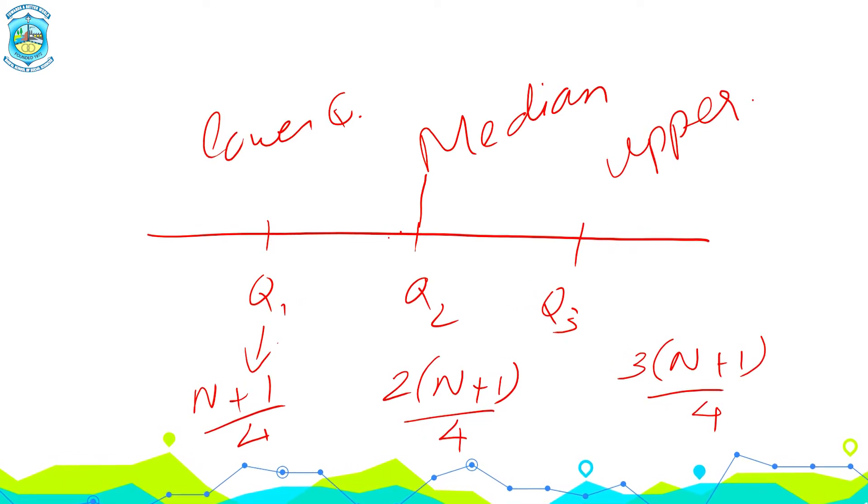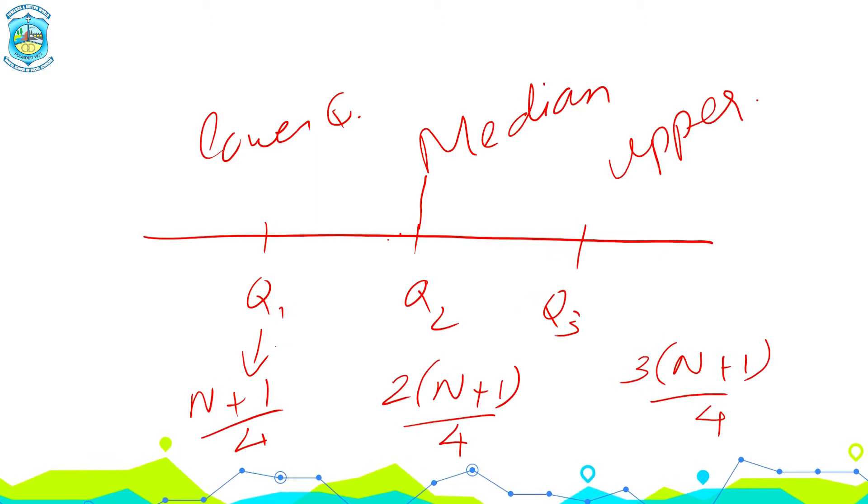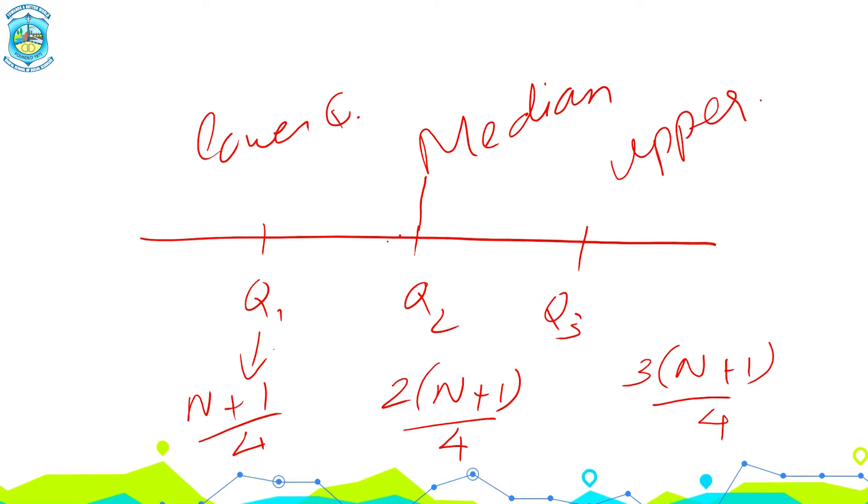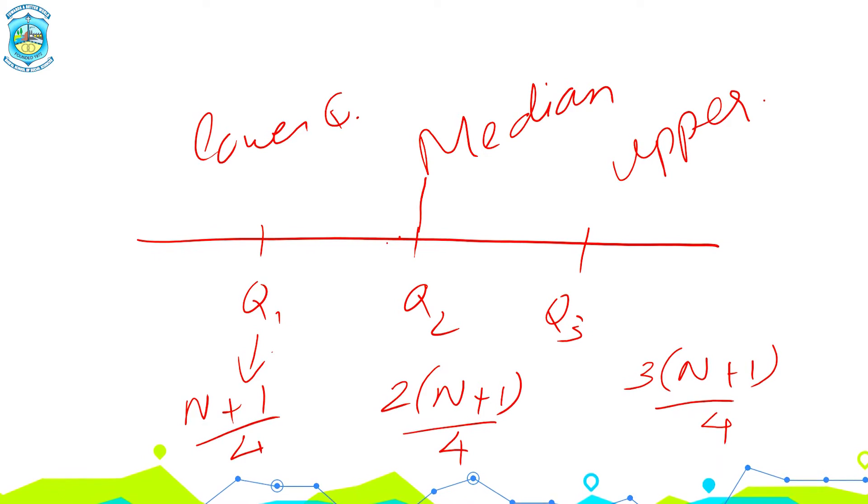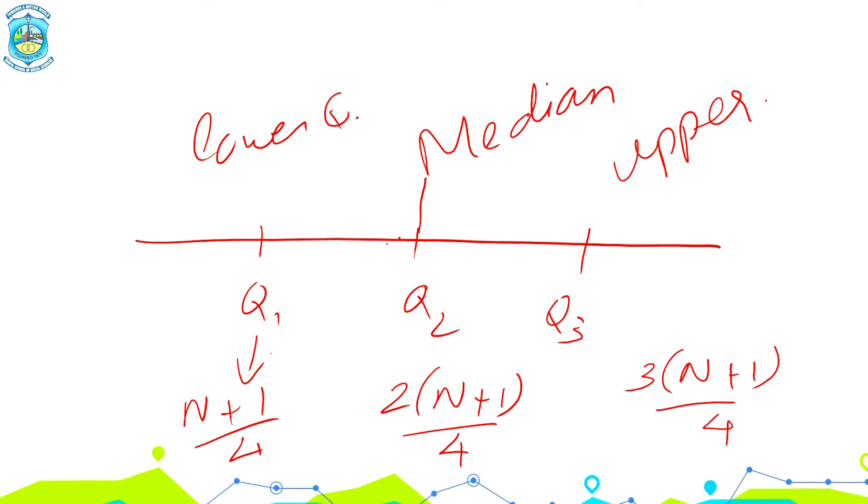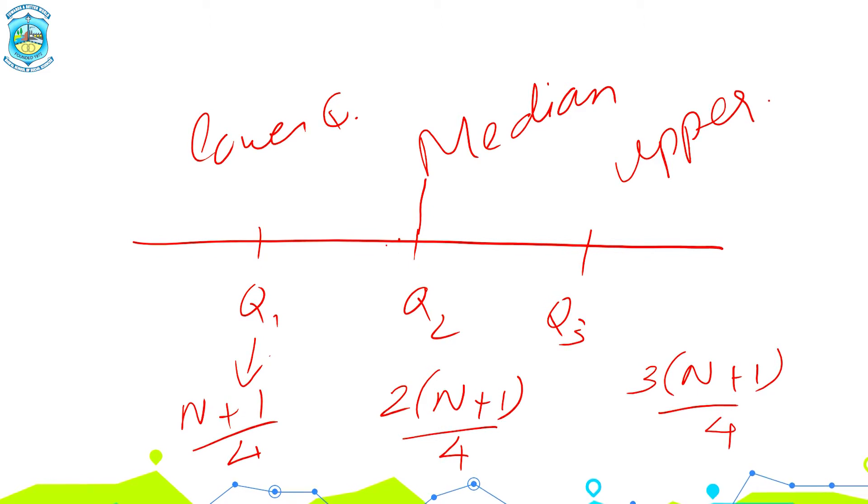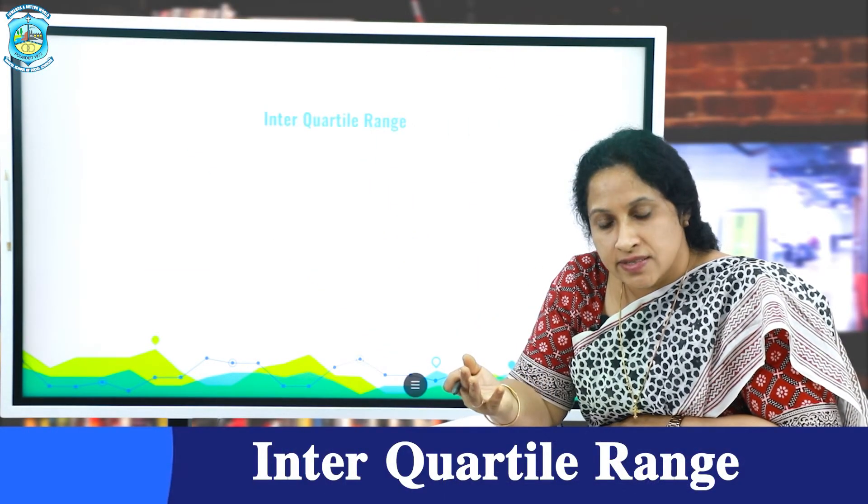This is the same for individual and discrete series. And for continuous series, the formula is n by 4. Just replace n plus 1 by n and you are good to go. n by 4, n by 2 and 3n by 4. And when we discussed on medians, we had ample questions solved on the family of median, which would be taking up in the later modules as well.